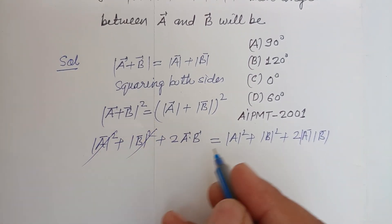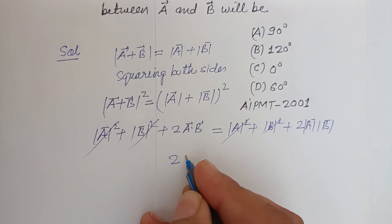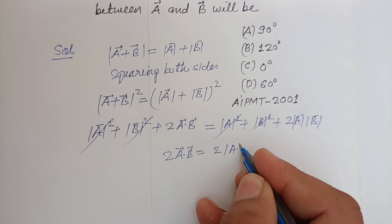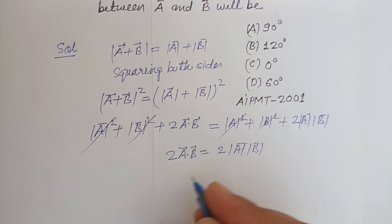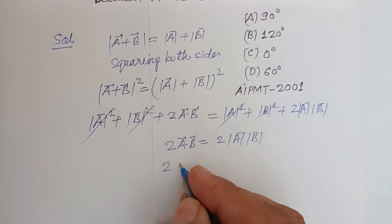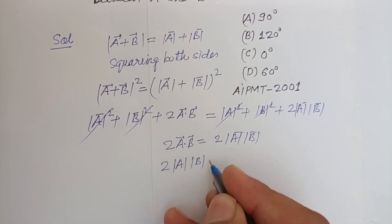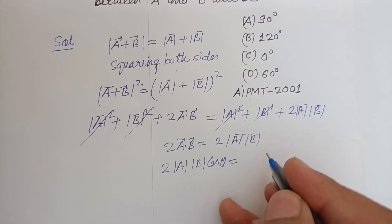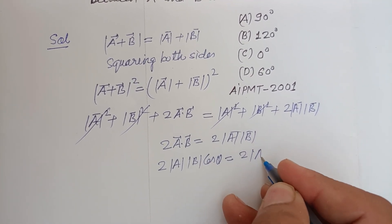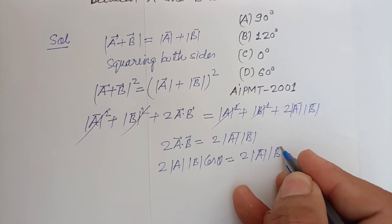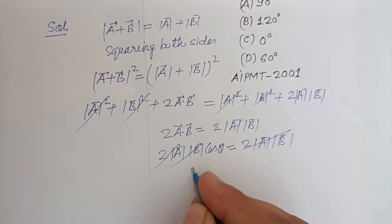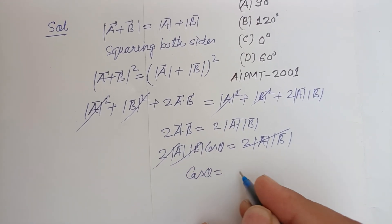The squared magnitude terms cancel out, so we get two times a dot b equal to two times magnitude a times magnitude b. Since a dot b equals magnitude a times magnitude b times cos theta, where theta is the angle between a and b, the two times magnitude a magnitude b terms cancel out, giving us cos theta equal to one.